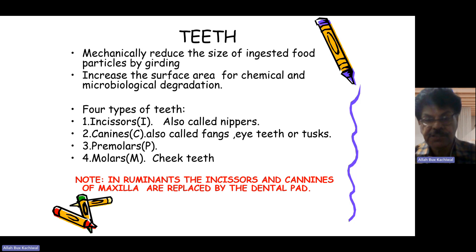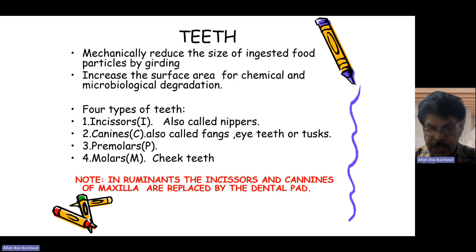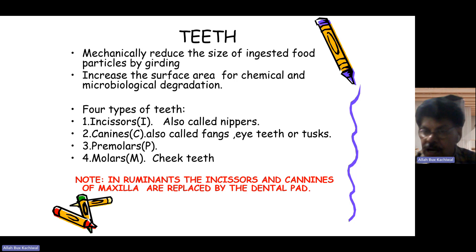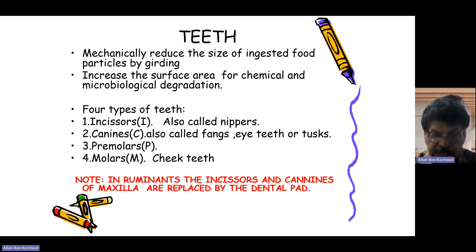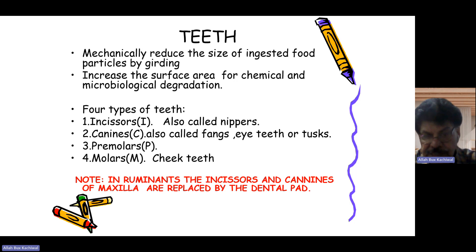The teeth mechanically reduce the size of ingested food into smaller particles by grinding, increasing the surface area for chemical and microbiological degradation. There are four types of teeth in animals: incisors, also called nippers; canines, also called fangs or tusks; premolars; and molars — the cheek teeth — which are present in all animals.